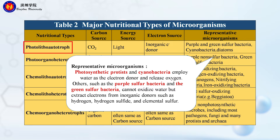They use water as their electron donor and release oxygen. Others, such as purple sulfur bacteria and green sulfur bacteria, cannot oxidize water but extract electrons from inorganic donors such as hydrogen, hydrogen sulfide, and elemental sulfur.